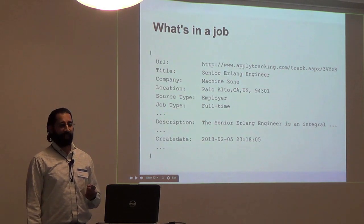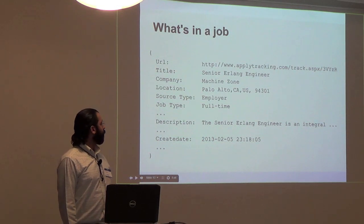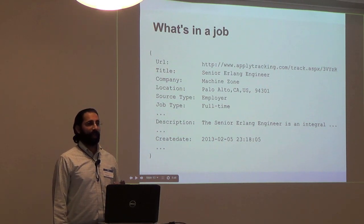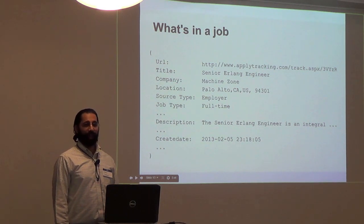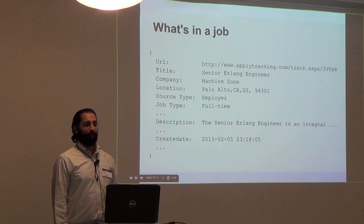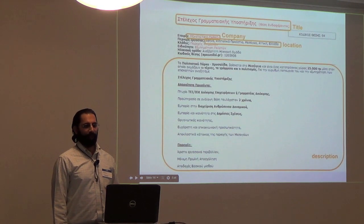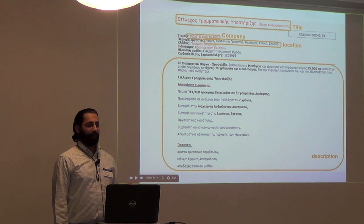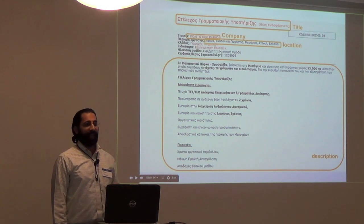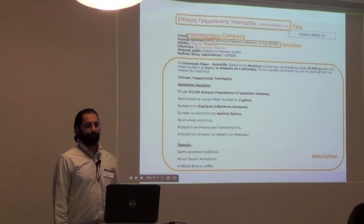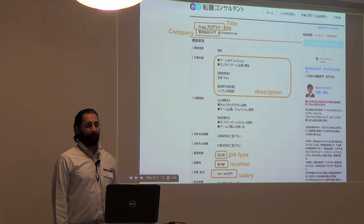We hit these job details pages and extract into a normalized form the content of the job. Each job has a permalink URL that we can send our job seekers to, a title, a company, and various other fields you might expect when serving jobs to job seekers. The aggregation can extract jobs just as well from a Greek site as from an English site, so we can give Greek jobs to Greek job seekers and Japanese jobs to Japanese job seekers.